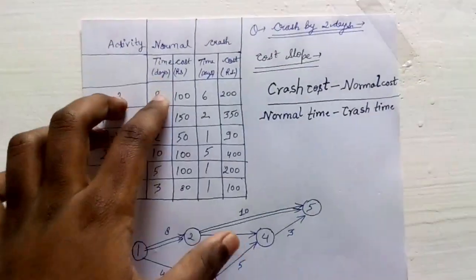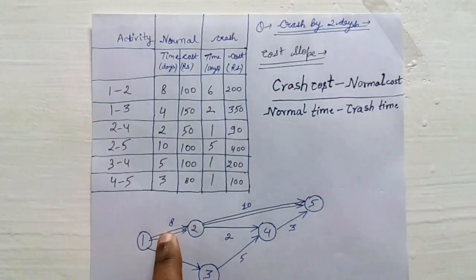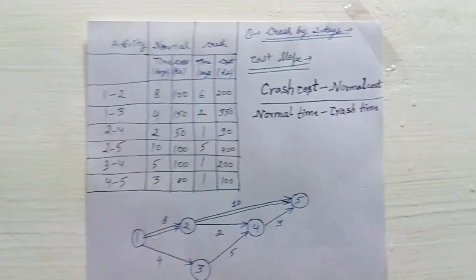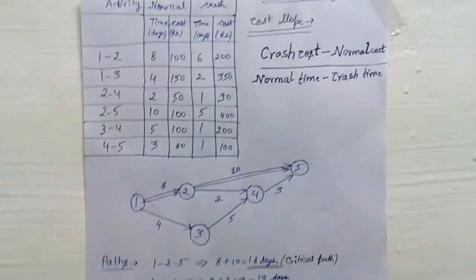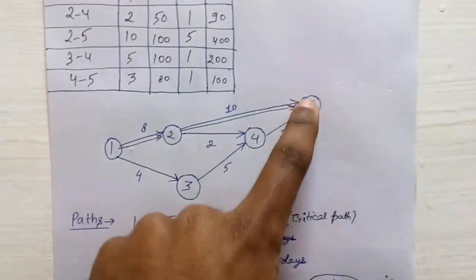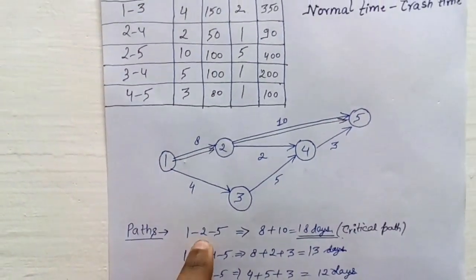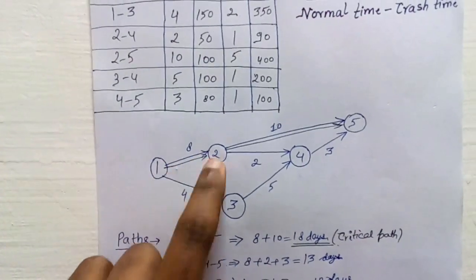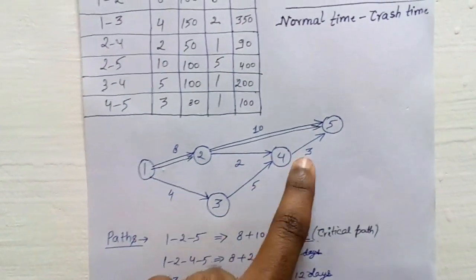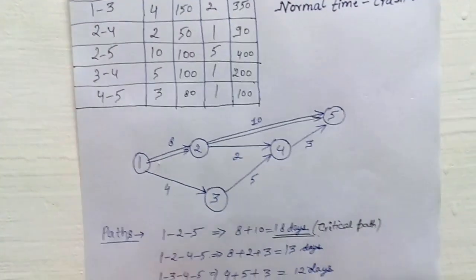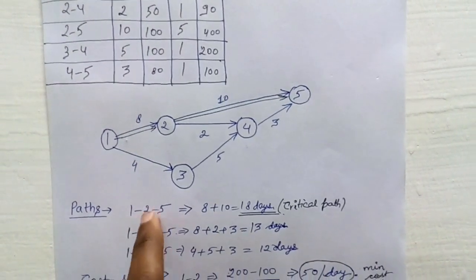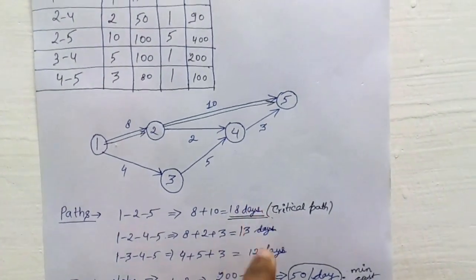Now there are 3 paths. First path: 1 to 2 to 5. Second path: 1 to 2 to 4 to 5. Third path: 1 to 3 to 4 to 5. You calculate the total time for each path: 18 days, 13 days, and 12 days respectively. The maximum is 18 days, so that is the critical path.